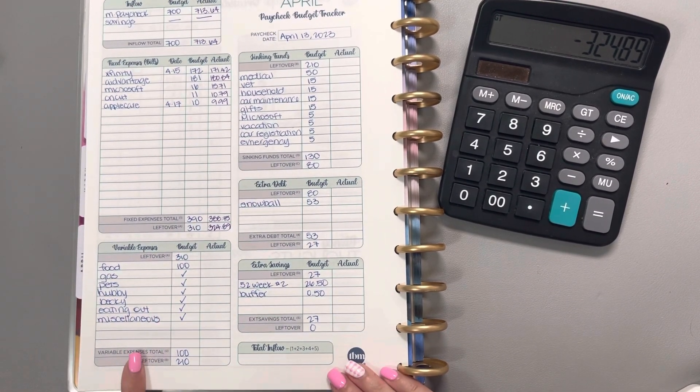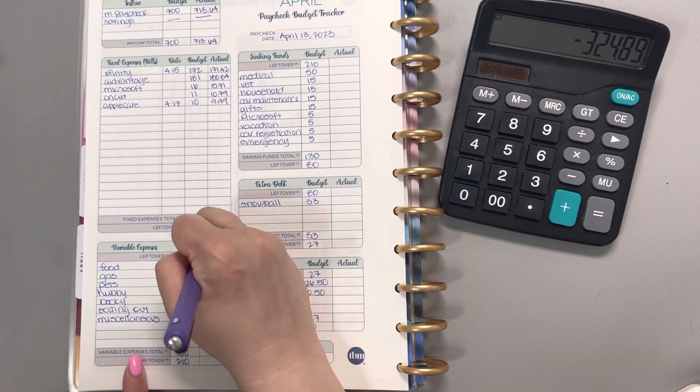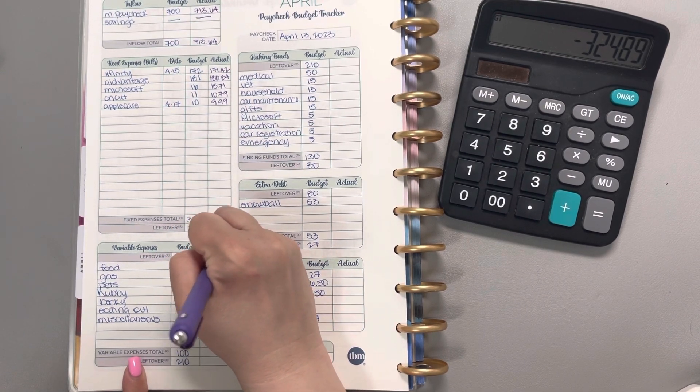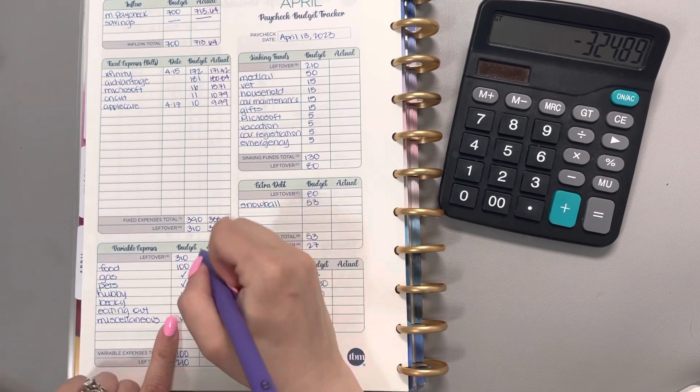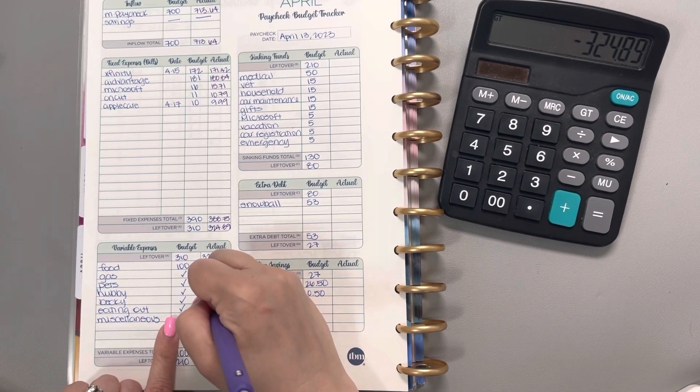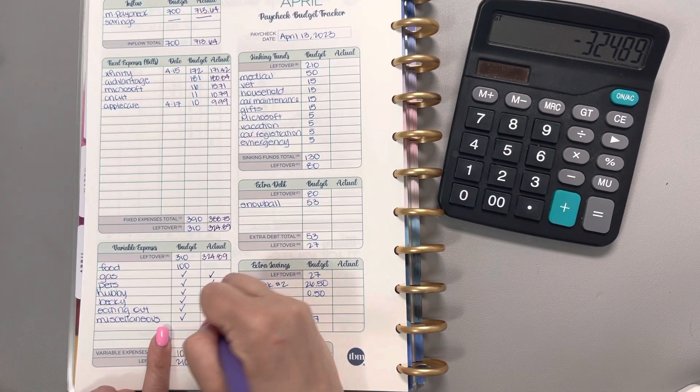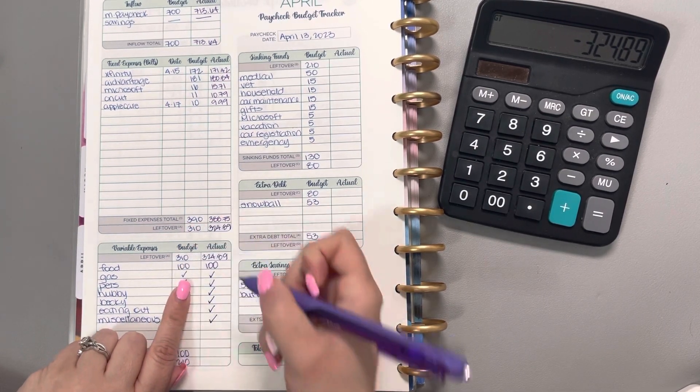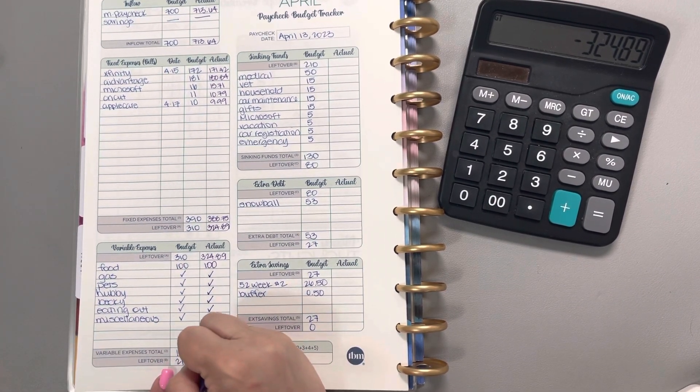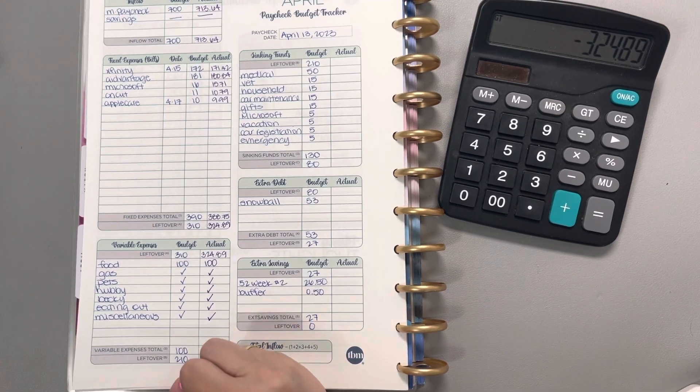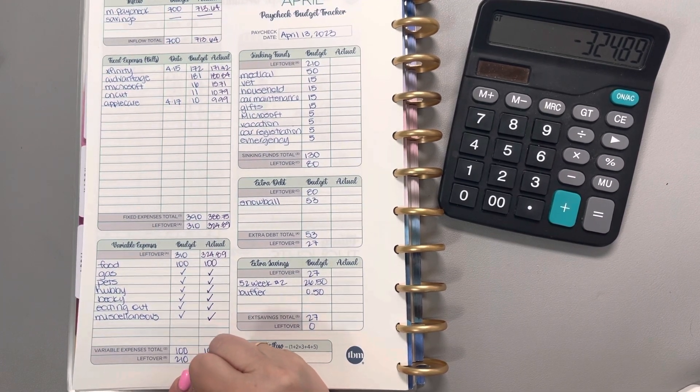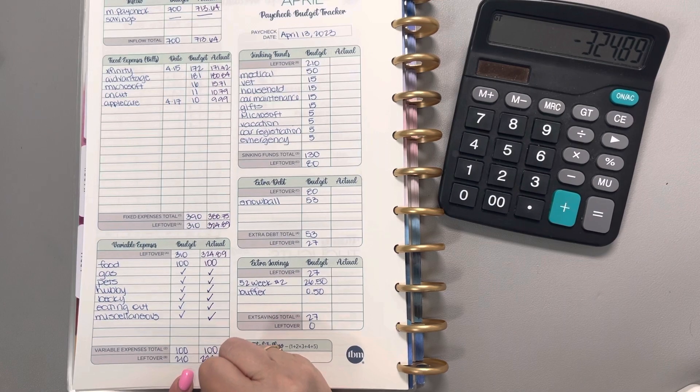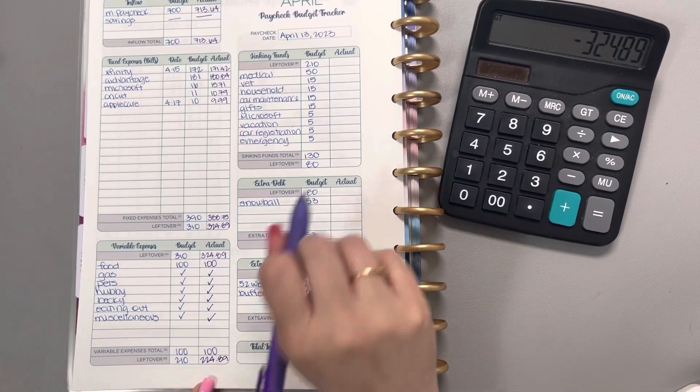Moving down to variable expenses, let me pull that leftover amount down. Our categories include gas, pets, hubby, meat, eating out, and miscellaneous. We're only going to put $100 towards food, which will leave us with $224.89 as leftover.